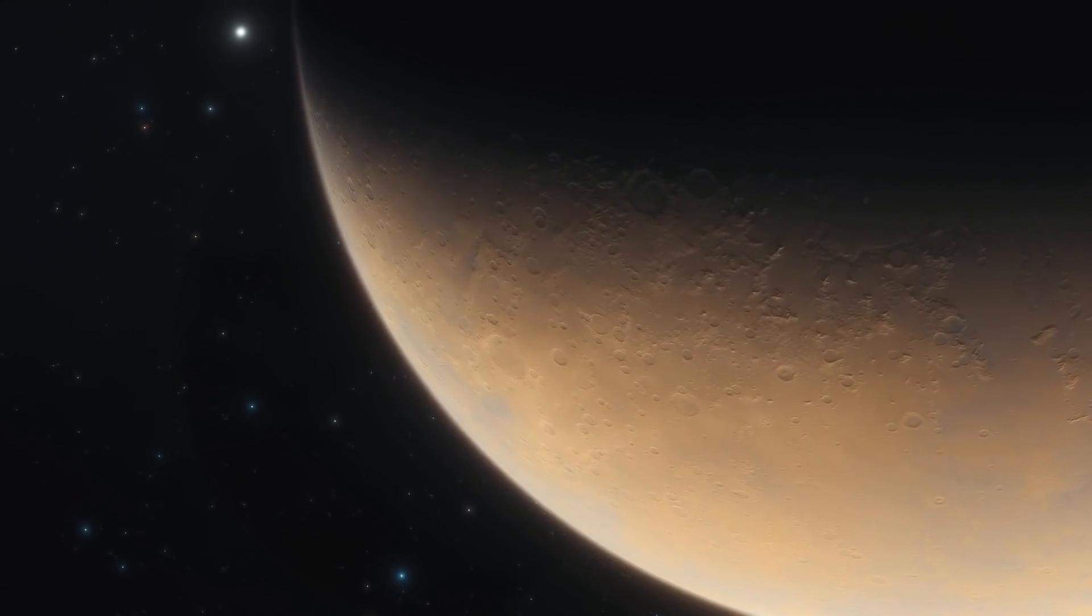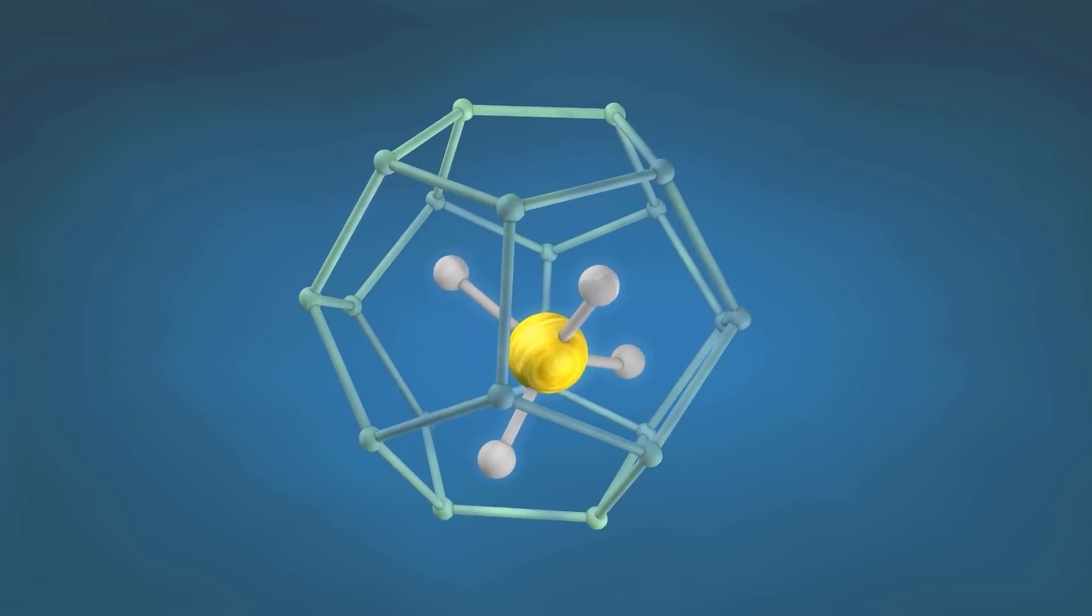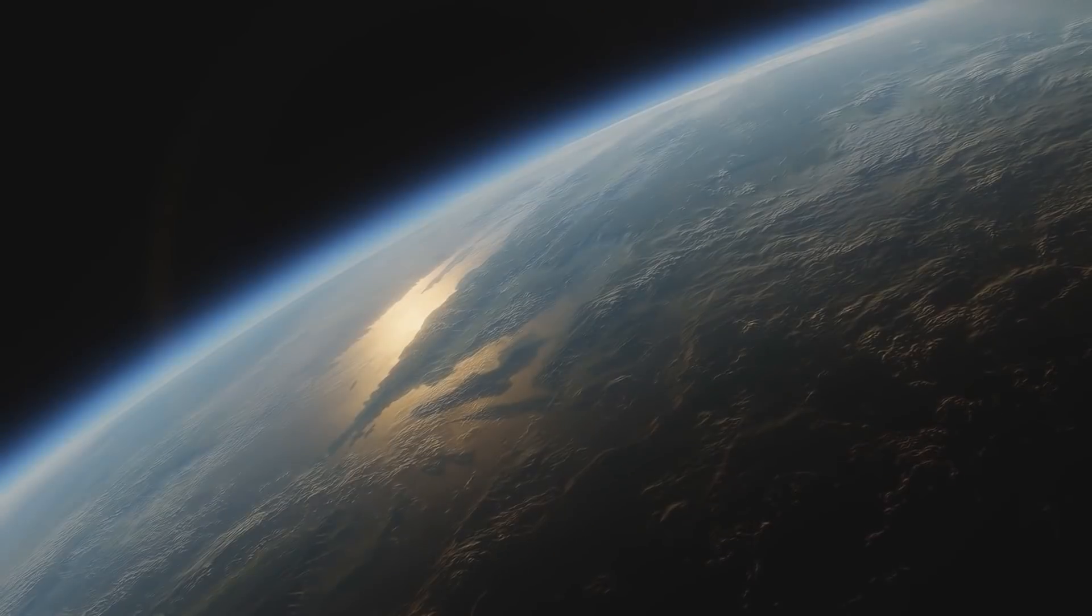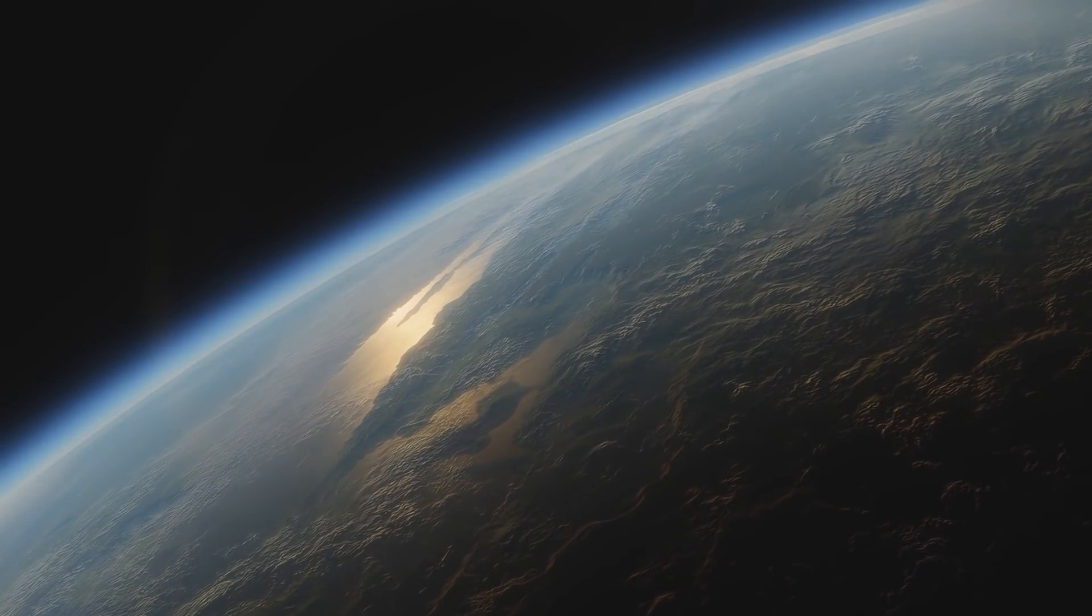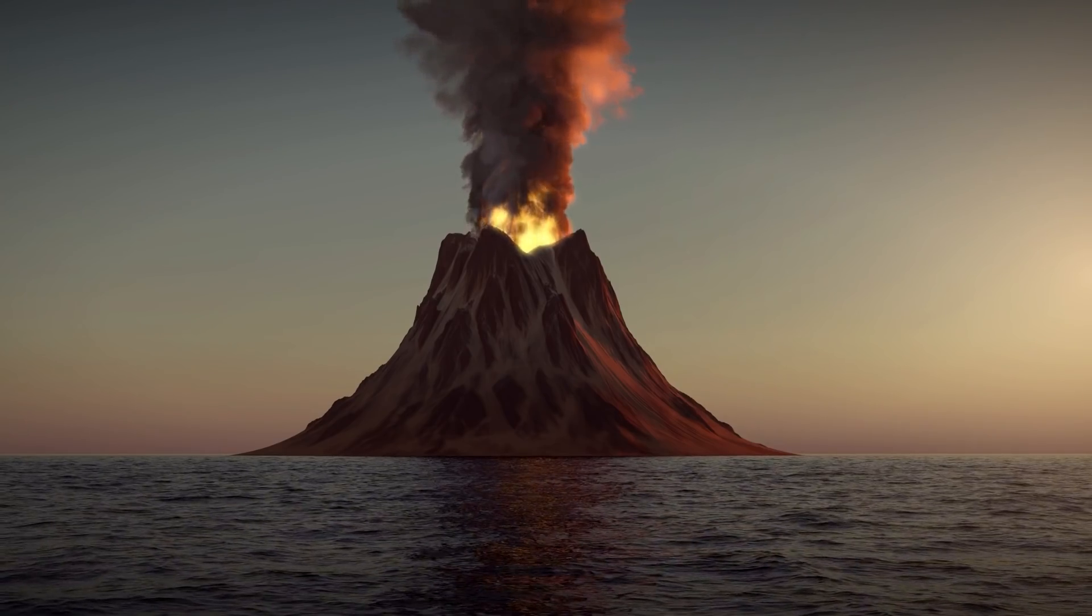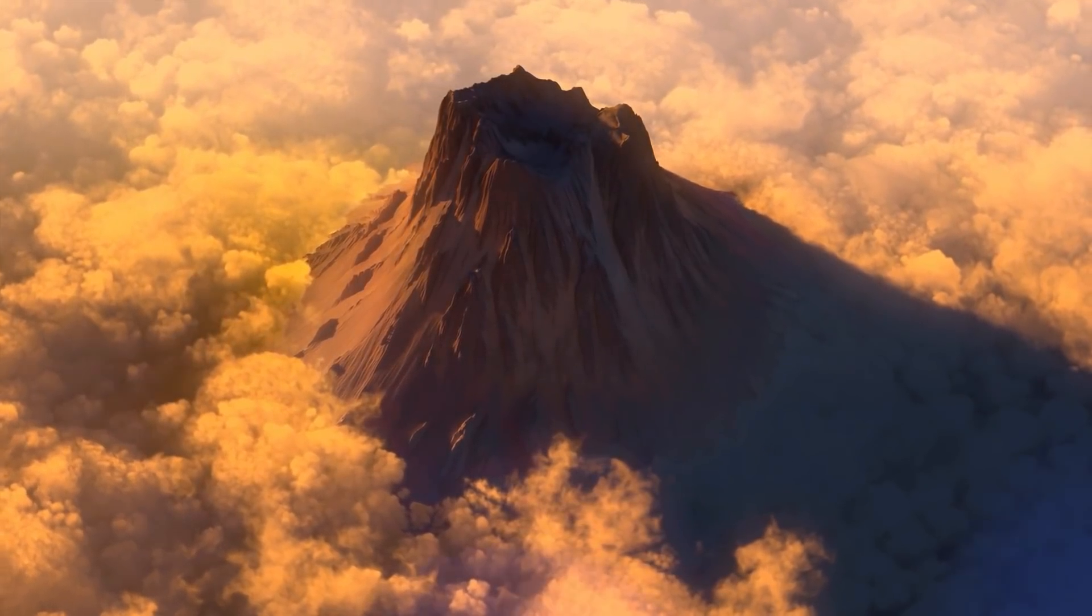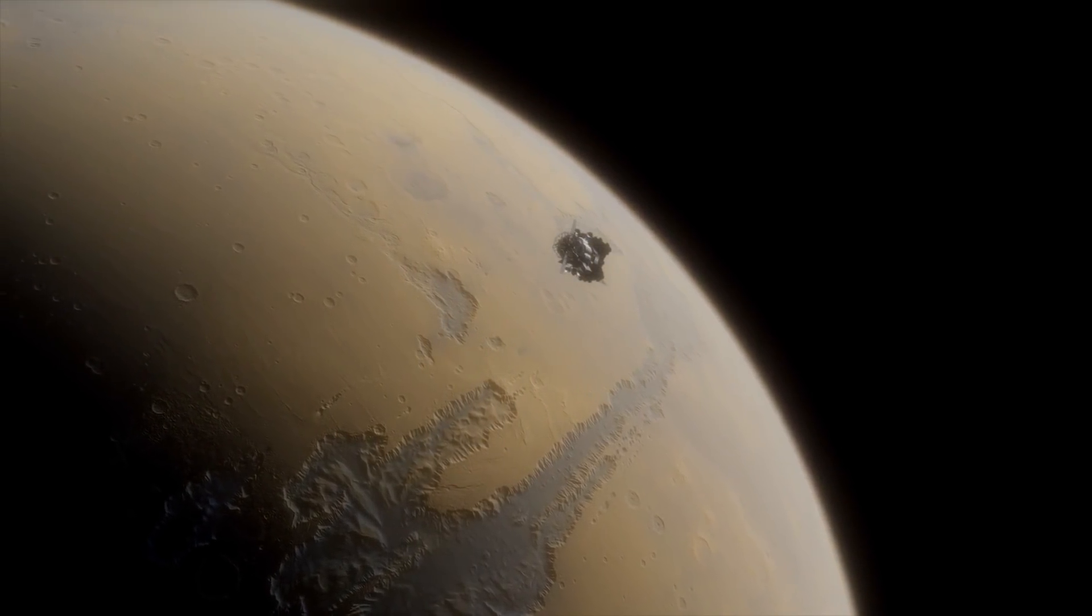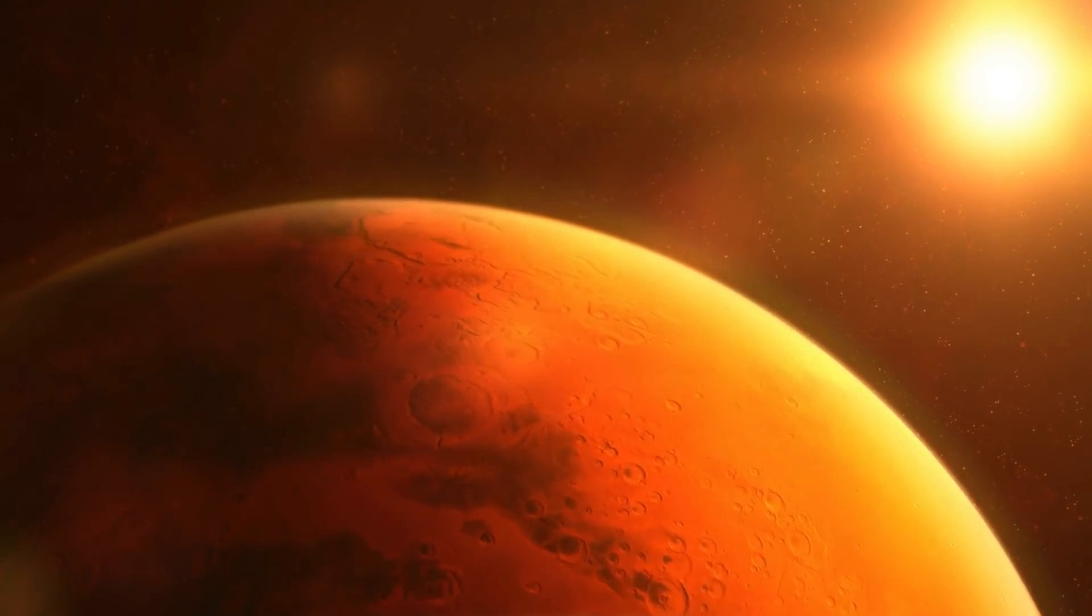For this reason, quite a few scientists consider it conceivable that the methane detected in the Martian atmosphere could also come not only from chemical geological processes, but also from comparable microbes. During the biological production of methane on Earth, ethane is almost always produced as an accompanying gas. If, on the other hand, the methane has a volcanic origin, for example, traces of sulfur dioxide can typically be detected. If we succeed in identifying the corresponding gases in the atmosphere of the Red Planet, we would be a great deal closer to solving the methane mystery on our neighboring planet.